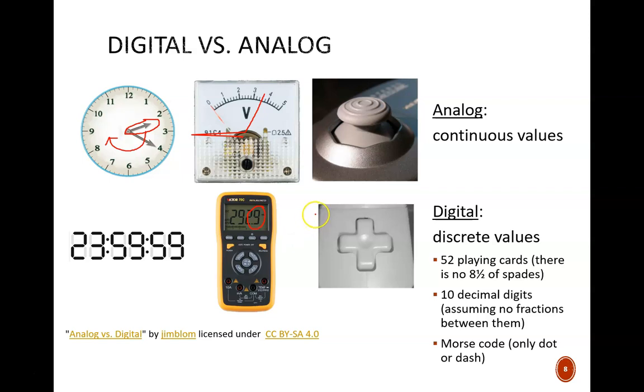Perhaps the most fun examples are the video game controllers on the right. With a joystick, you can press your thumb to any direction in a full 360-degree circle. With a directional pad, you can only choose between a small set of directions: up, down, left, or right. More examples of common digital systems are listed down here.